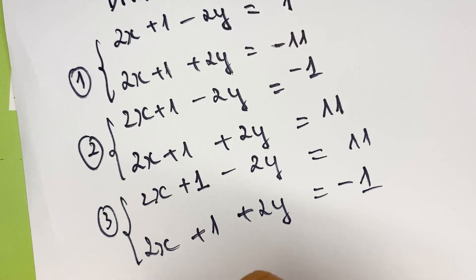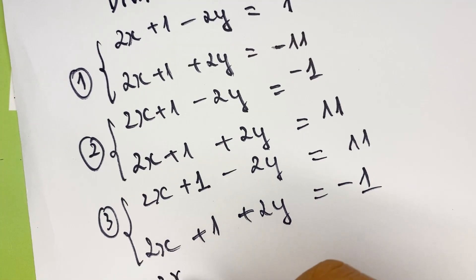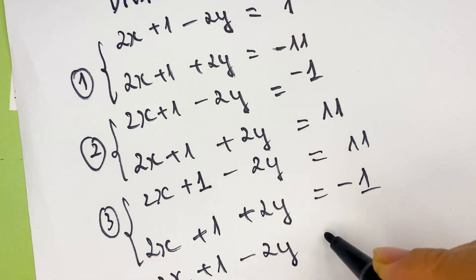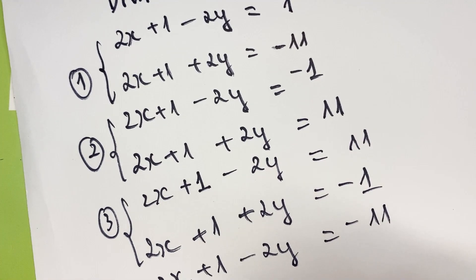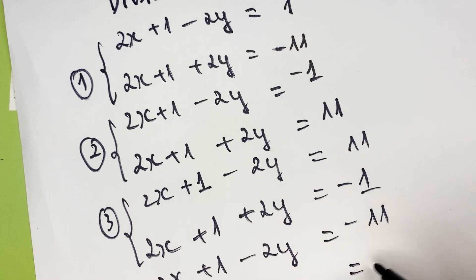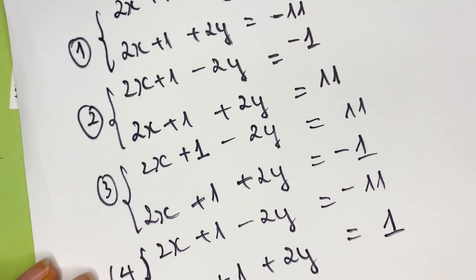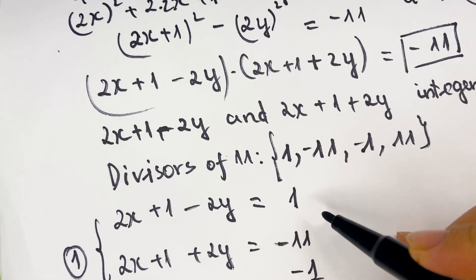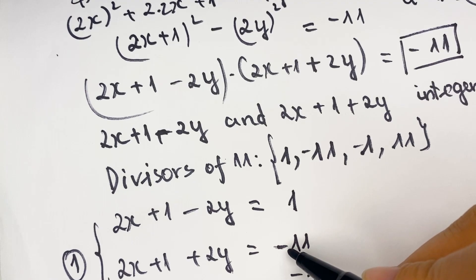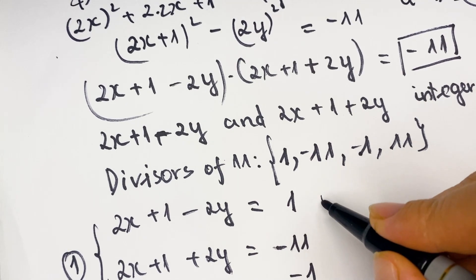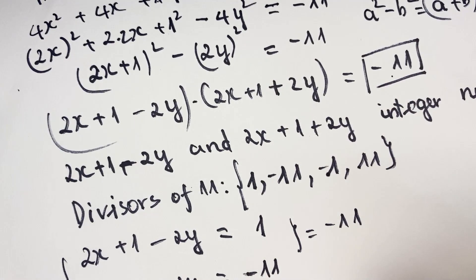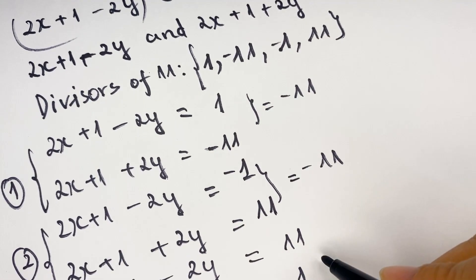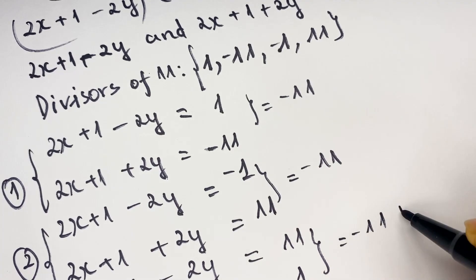And situation 4: (2x plus 1 minus 2y) equals negative 11 and (2x plus 1 plus 2y) equals 1. You can verify each pair multiplies to negative 11. All four cases check out — correct.